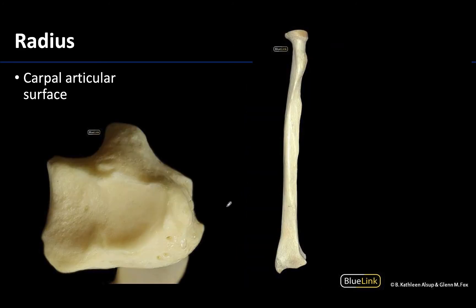It is the lateral radius that is the major player of the forearm in the wrist joint. You can see that it widens significantly the more distal you get, and it is this inferior most carpal articular surface — visible in a straight-on inferior view — that will articulate with the proximal row of carpal bones to form the radiocarpal or wrist joint.